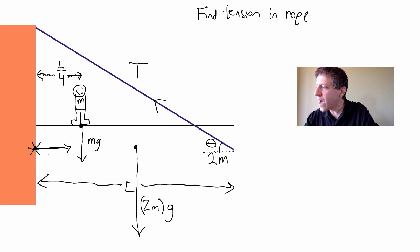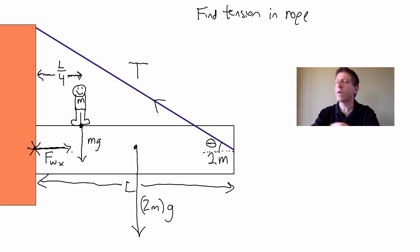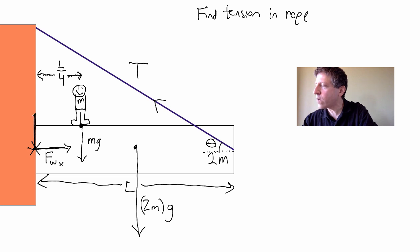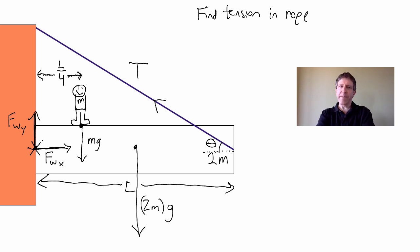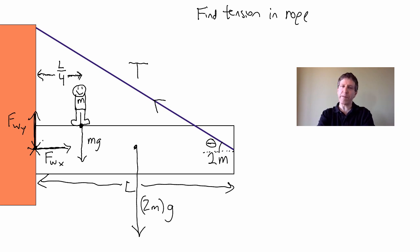I'm going to draw the horizontal component and call it F_Wx — the force of the wall in the X direction. And we also have the force of the wall in the Y direction, F_Wy. Both act right at that pin where the sign is being held. Those are two other forces acting on the sign — really just one force, the force of the wall, split into two components.